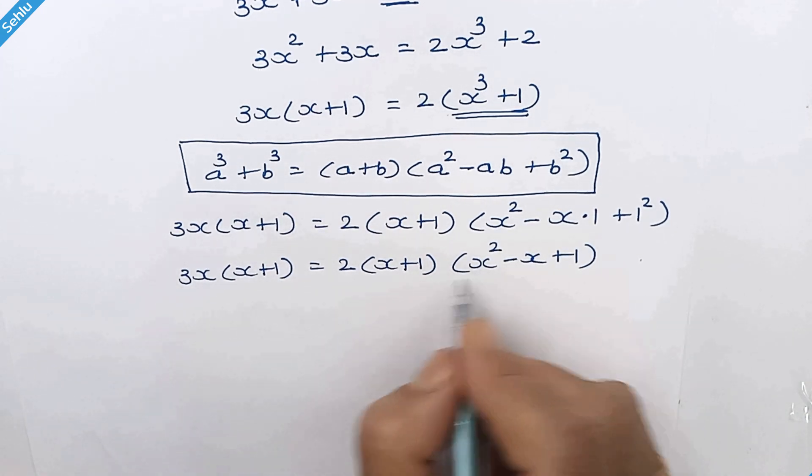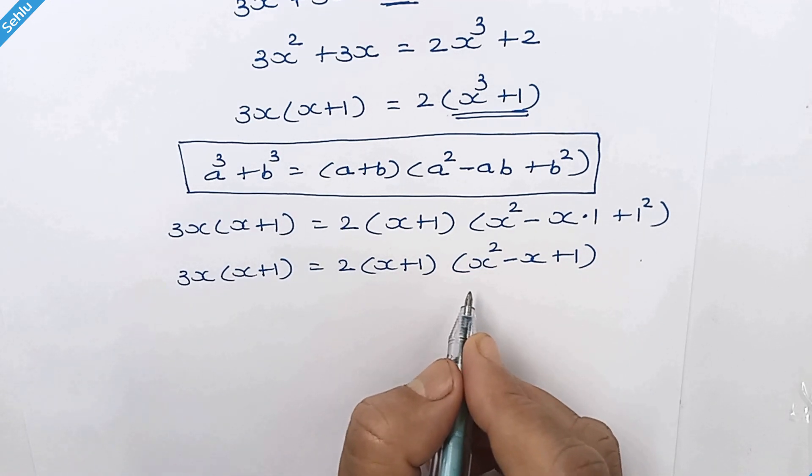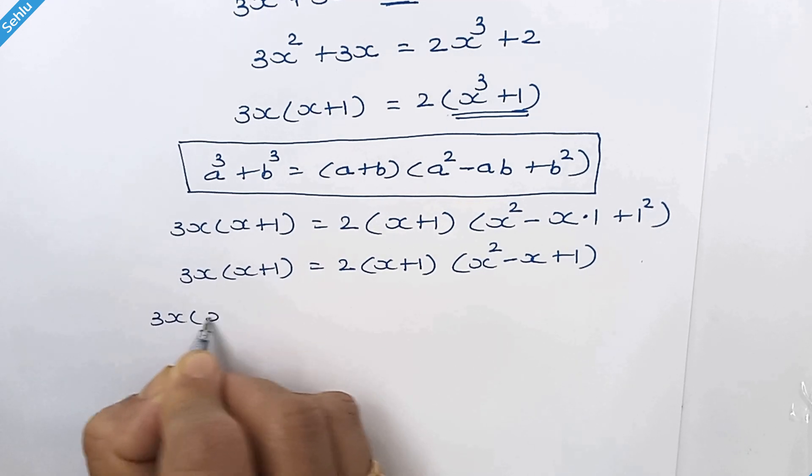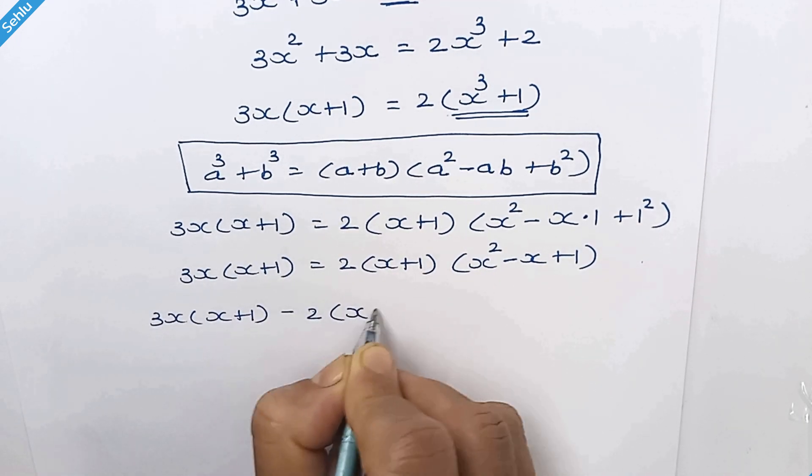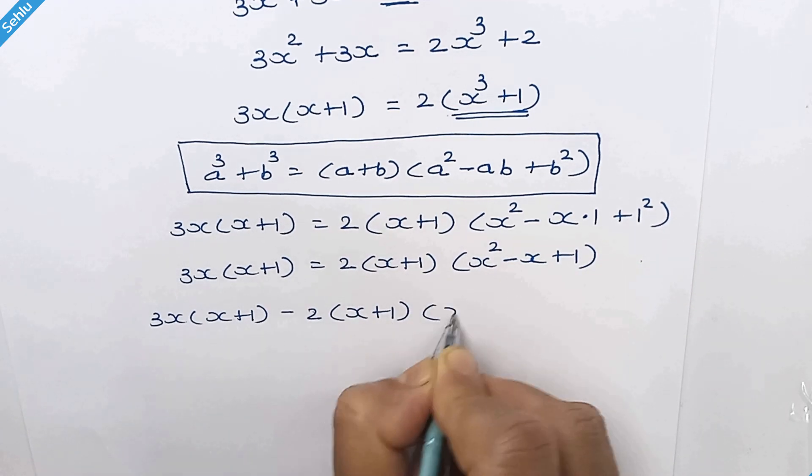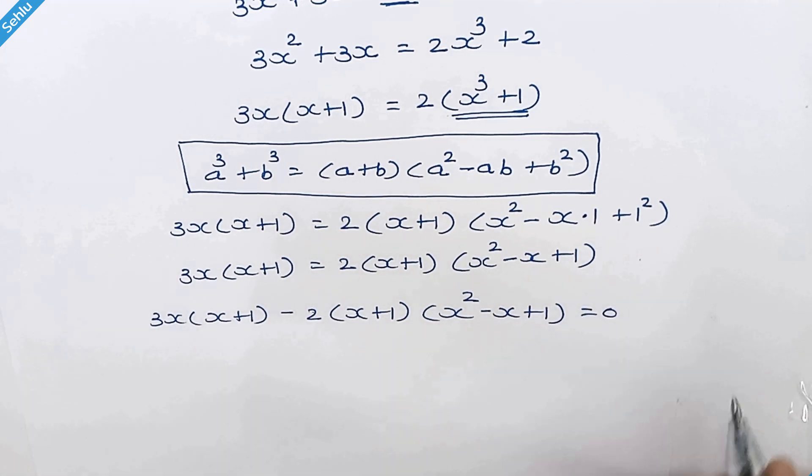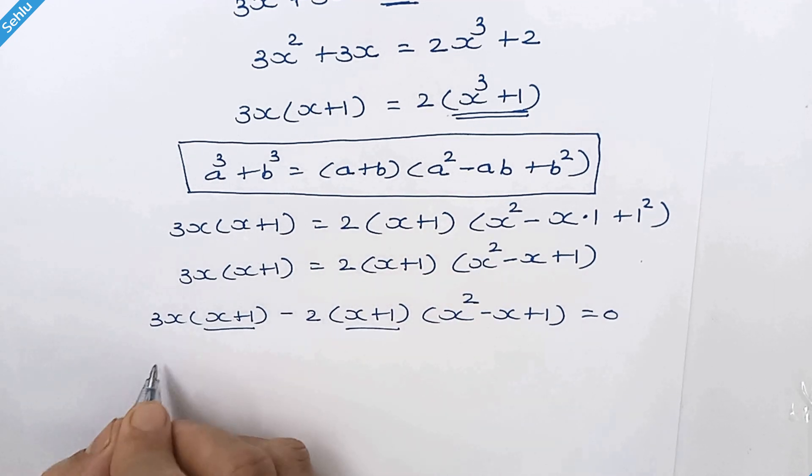Now we're gonna move this right hand side to left hand side. If we operate as it is, we might miss a solution. We can factor out x plus 1.